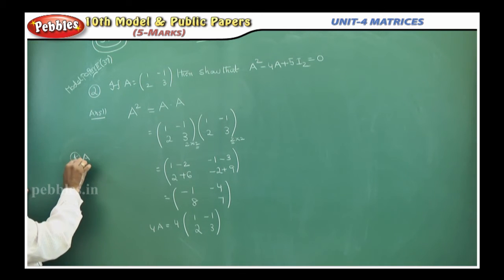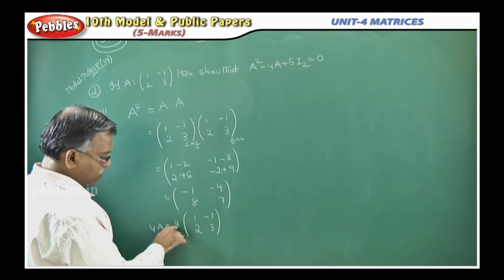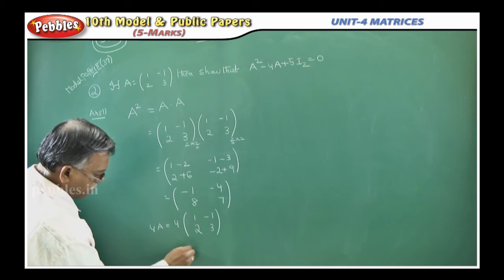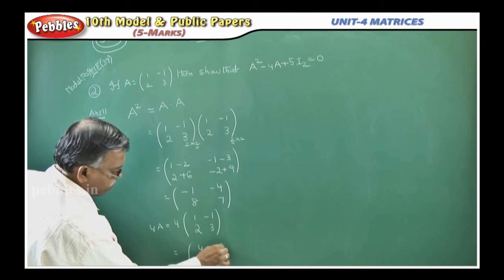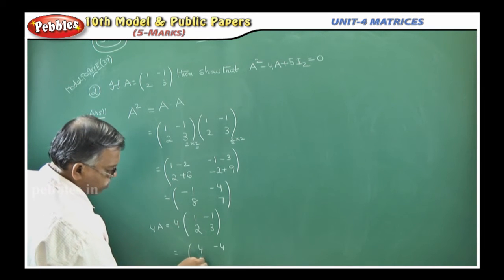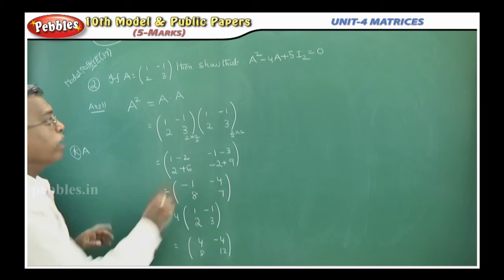KA means you are multiplying A matrix with K. Here also, this is A matrix. You should multiply with 4. You multiply every element with 4. 4 into 1 is 4, 4 into minus 1 is minus 4, 4 into 2 is 8, 4 into 3 is 12. So 4A you got.